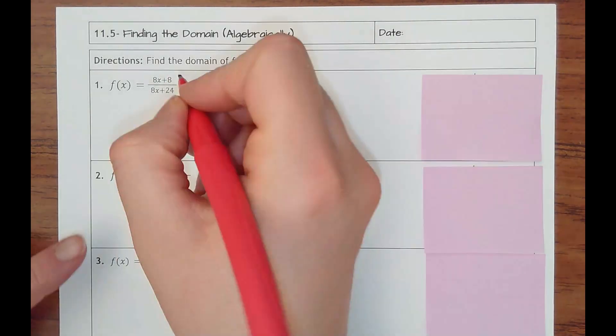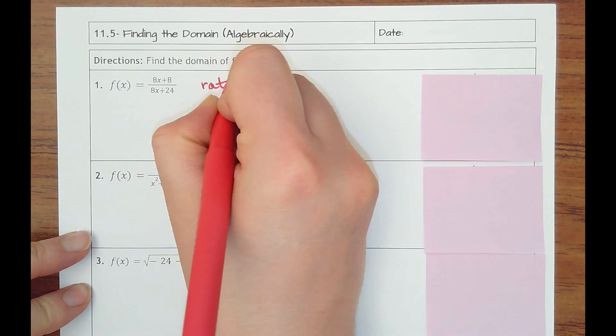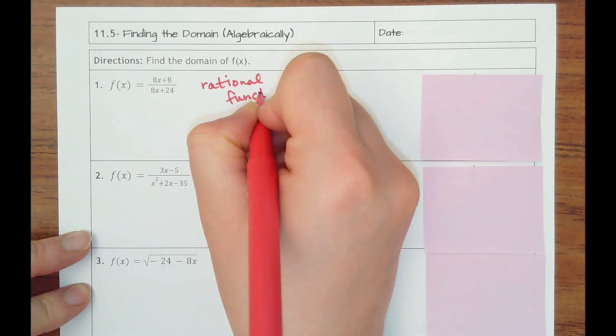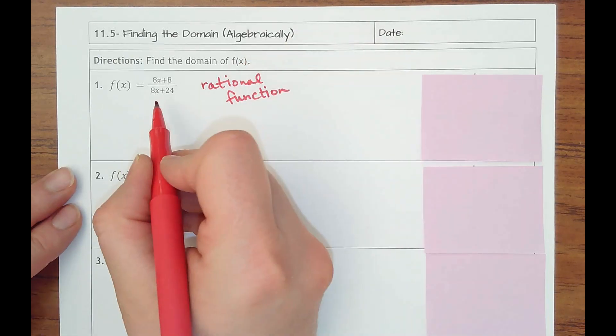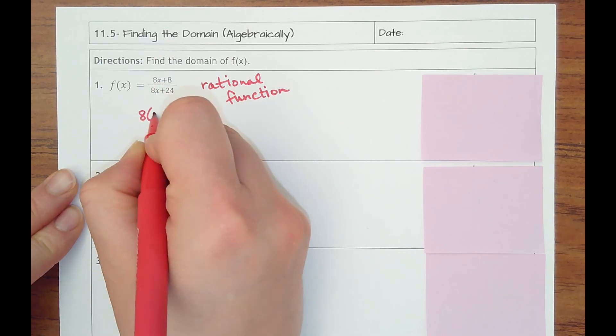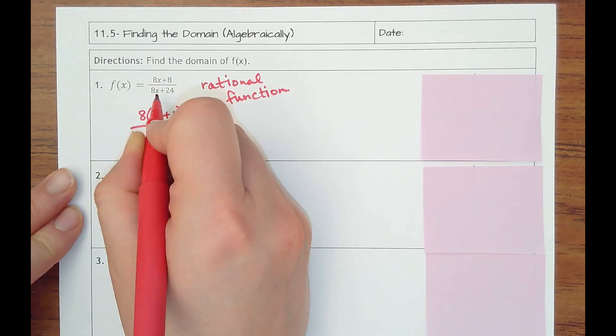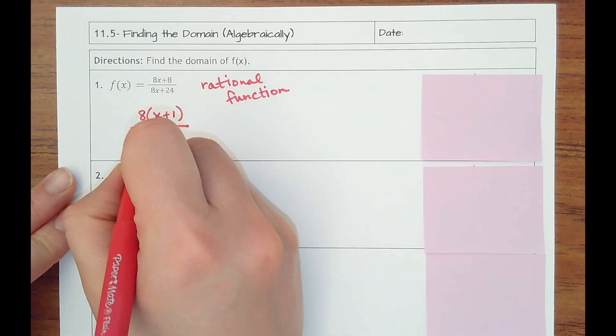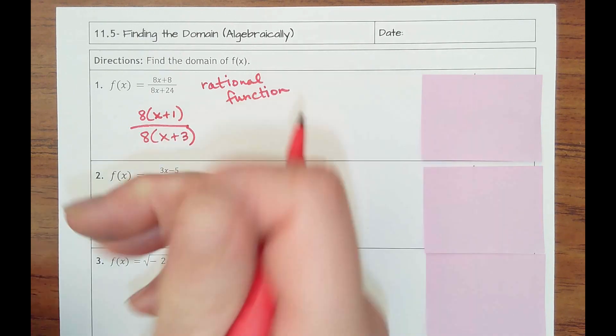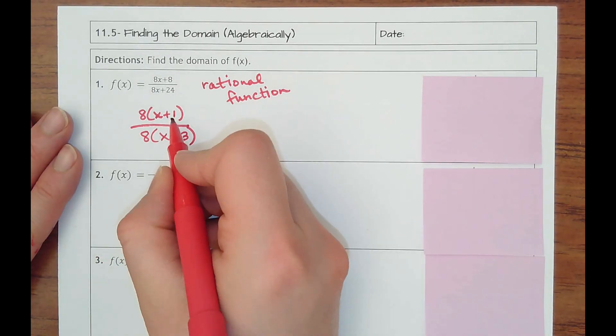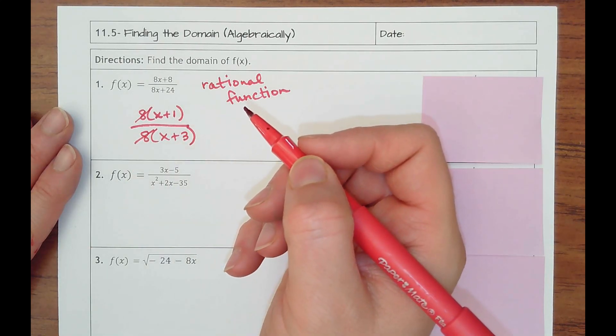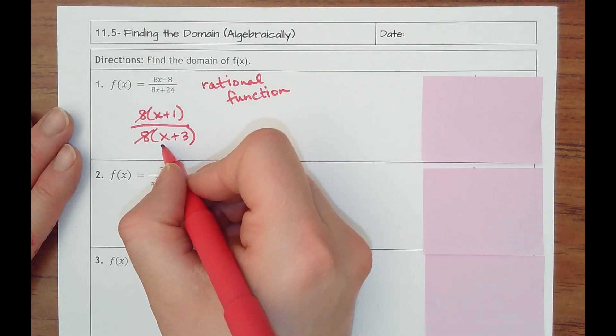So on number one, this is called a rational function. And our whole last unit was about this. We could factor this on top and bottom. So top, I could take out an 8 and that would be times an x plus 1. On the bottom, I could take out an 8 and that would be an x plus 3. And so nothing cancels other than you could cancel out the 8s, but that's not a factor in terms of it doesn't have an x with it.